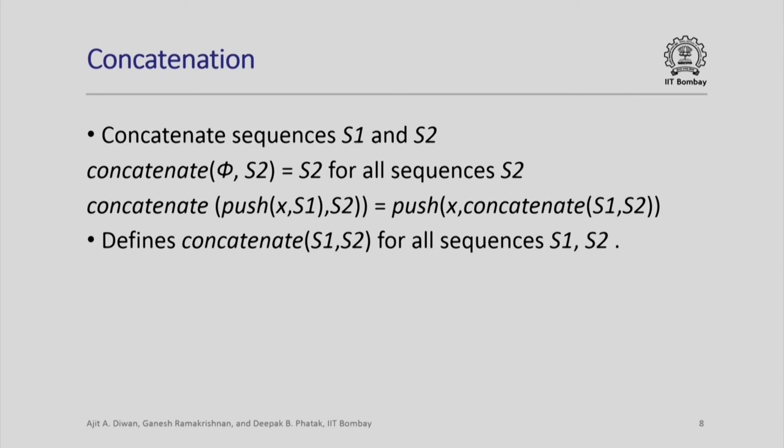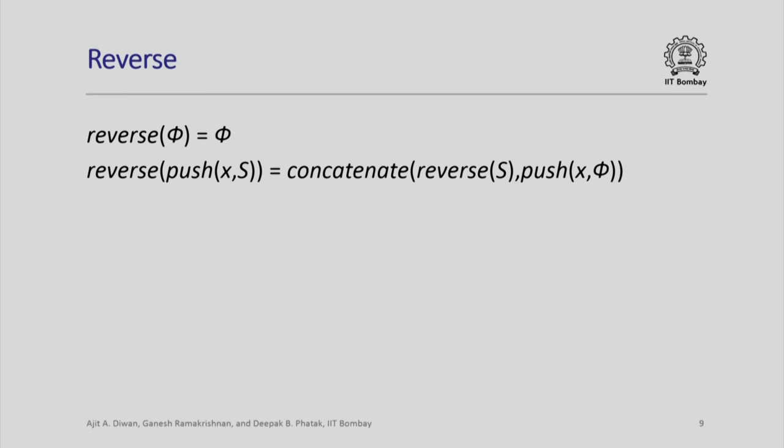This defines the concatenate operation for all sequences s1 and s2. Here is another example of an operation on a sequence, called reverse, in which we just want to reverse the order of the elements in the sequence. There can be several ways in which we can define the same operation. Reverse of an empty sequence is always the empty sequence. Reverse of push x comma s — that is, the sequence obtained by adding element x into the sequence s — will be: concatenate reverse of s and the sequence obtained by pushing x into the empty sequence. So to reverse the sequence obtained by pushing x into s, I reverse the sequence s and then append the sequence containing only the element x at the end.